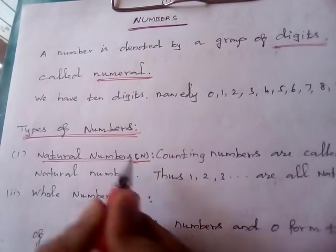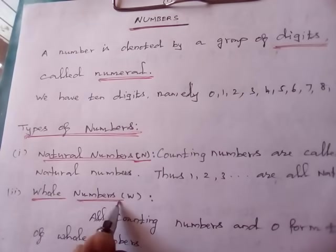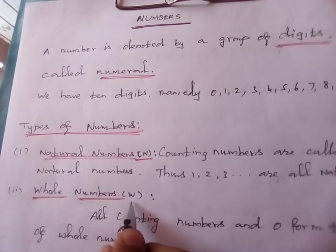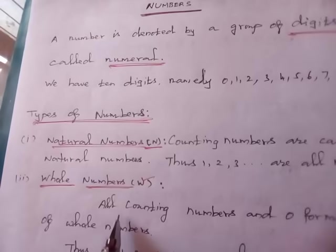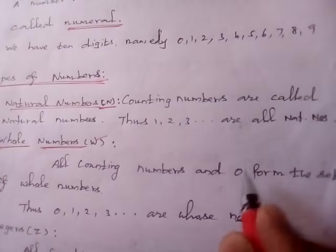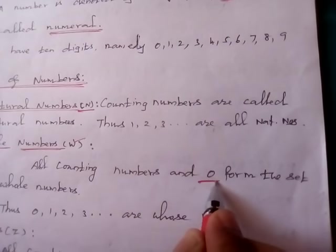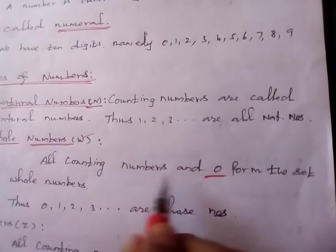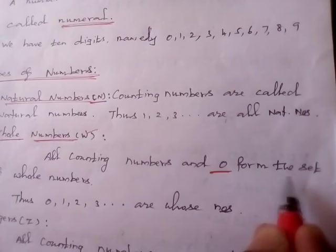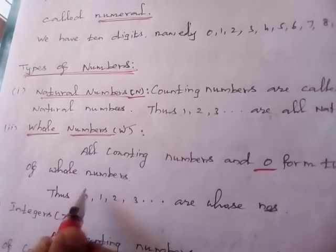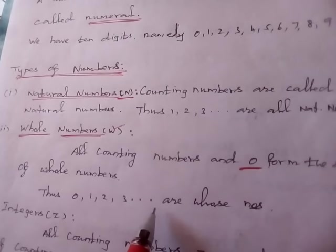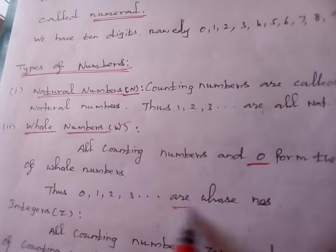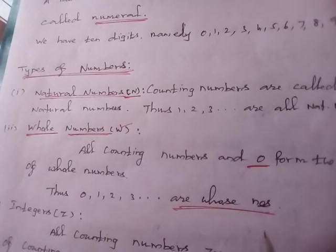Next, whole number. Whole number is denoted by the letter W, capital W. All counting numbers and 0 form the set of whole numbers. Thus, 0, 1, 2, 3, etc. are called whole numbers.